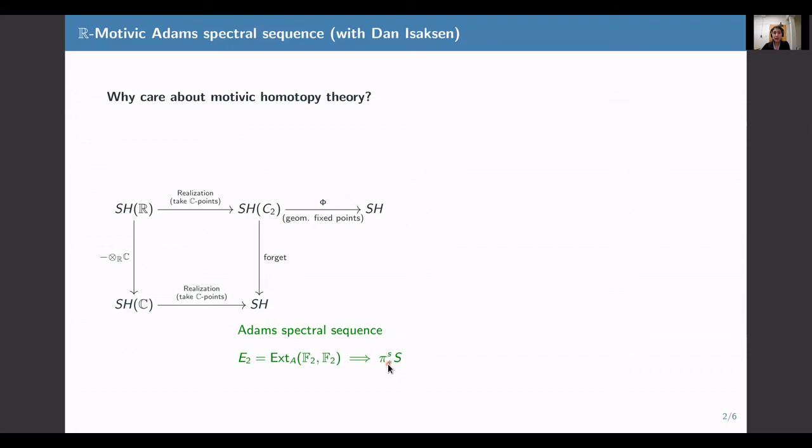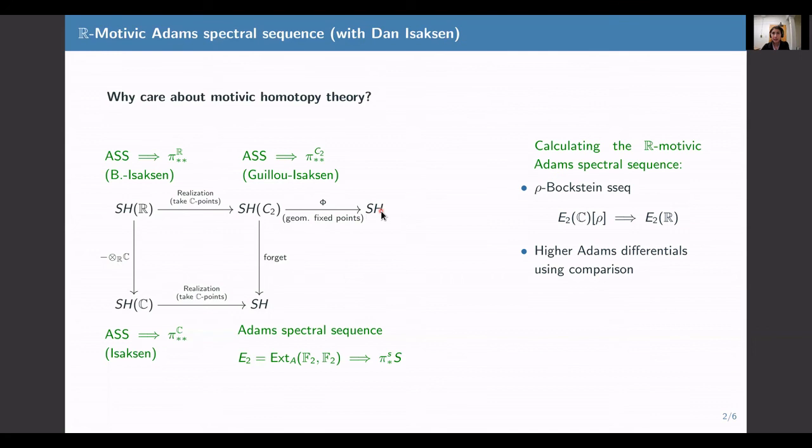The Adams spectral sequence is a very general gadget, and you can study analogous versions of it in all the contexts in this diagram. My project with Dan involved computing the Adams spectral sequence for the R-motivic category. In our paper on the arXiv, we compute the part of this that, under R-realization, corresponds to the classical groups up to the 11th stem.